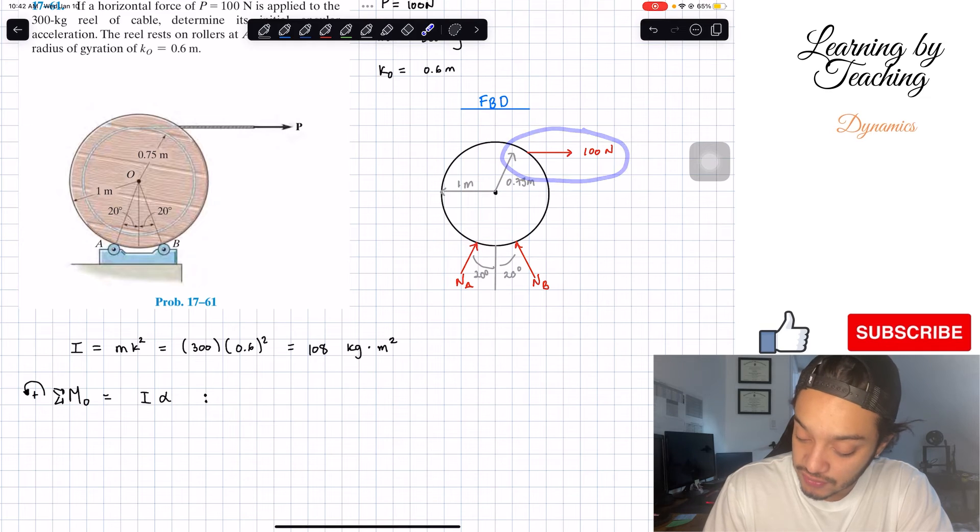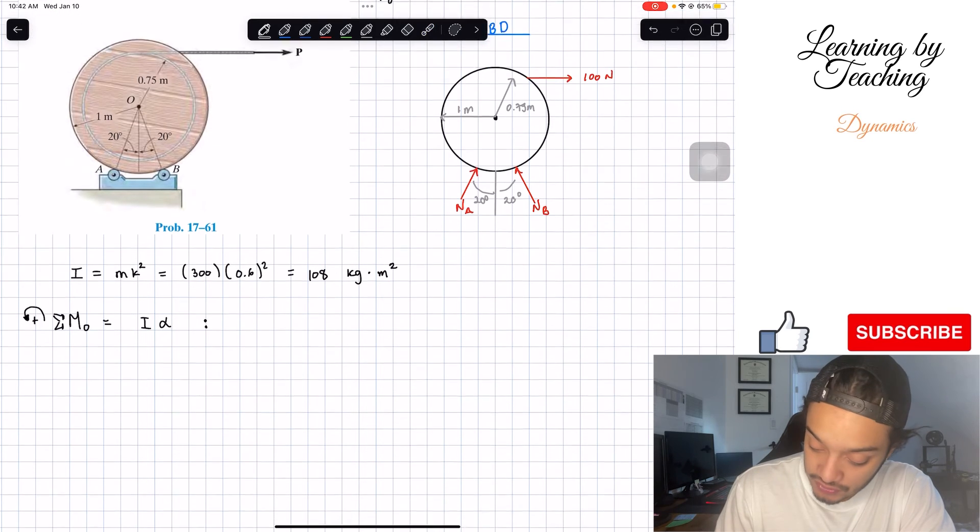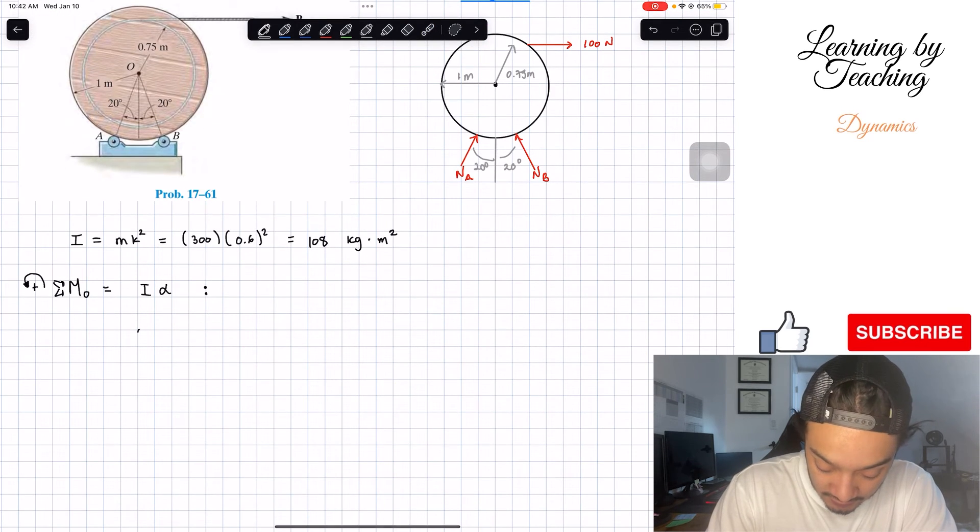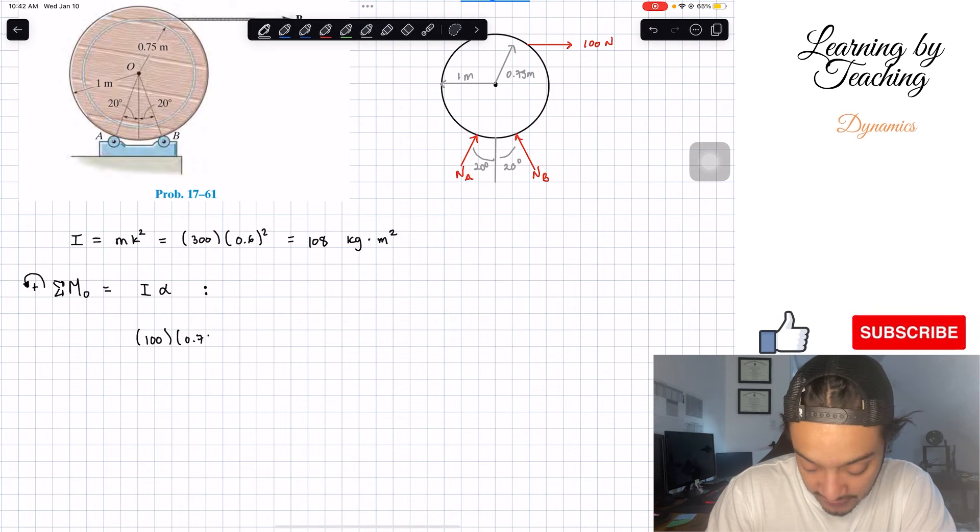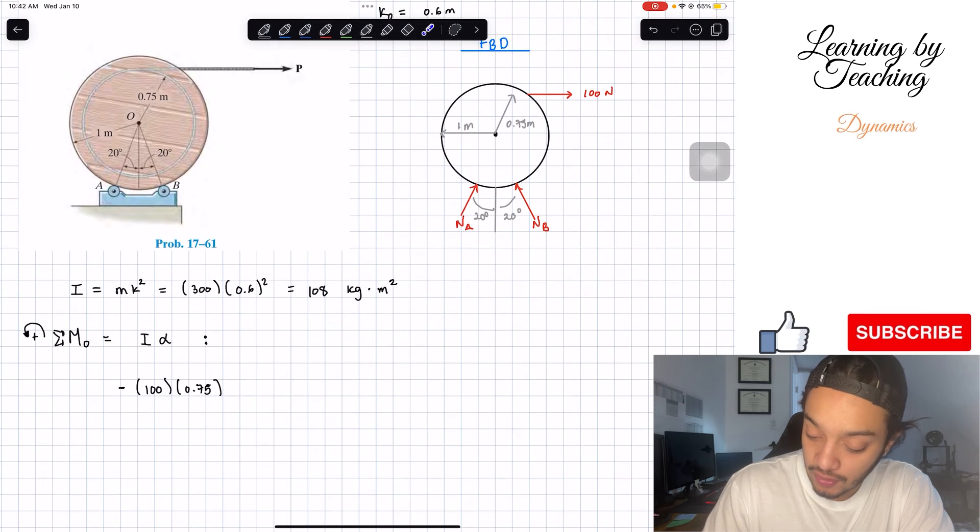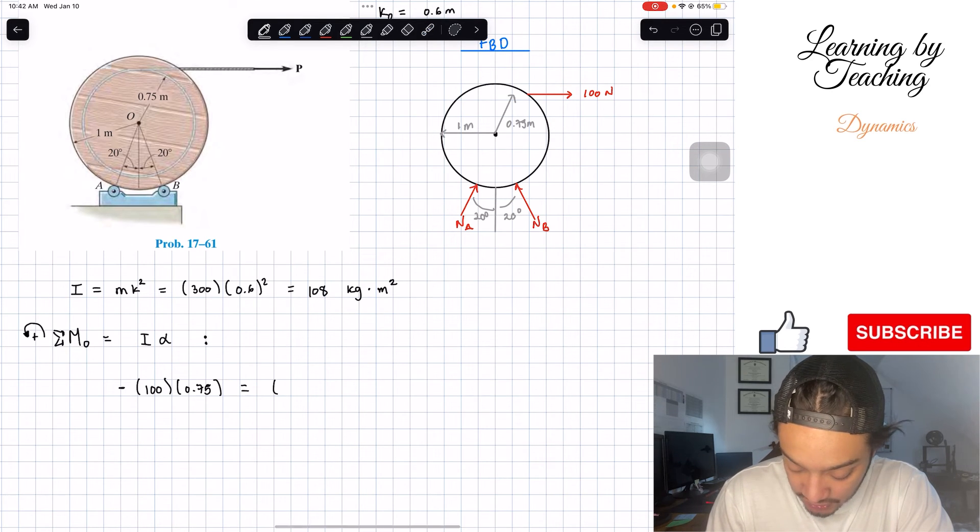Lastly, our force is 100 N with the distance of 0.75 meters. We're going to have 100 multiplied by 0.75. The direction is negative because it's going clockwise, and I'm assuming counterclockwise is positive. This should be equal to our moment of inertia, which is 108 kilograms, multiplied by our acceleration.